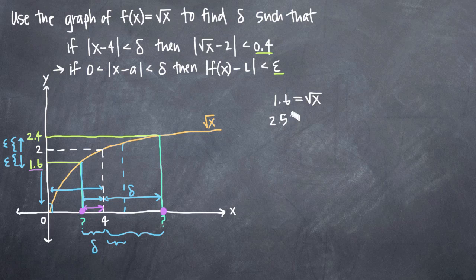What this tells us is that the corresponding x value for a y value of 1.6 is x equal to 2.56. So this point right here is at 2.56. So now what we really need to know is the distance between 2.56 and 4, because that will give us our delta here. So we want to say 4 minus 2.56 to find the difference between the two.